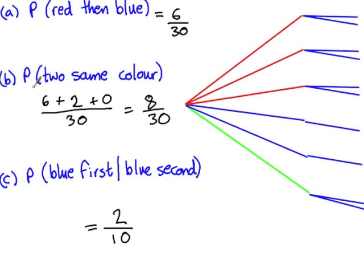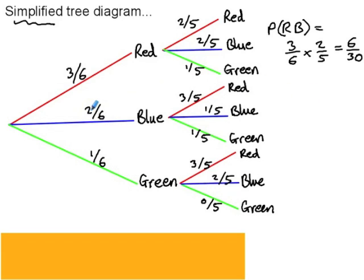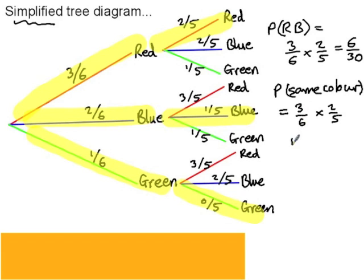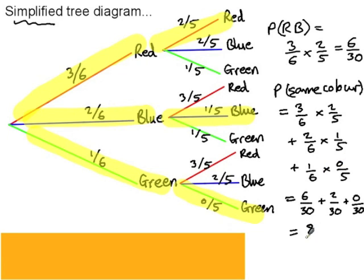The second question was: what's the probability of selecting two the same colour? Looking along the branches where we've got two the same colour — that's red-red, blue-blue, or green-green. The probability of same colour is three over six multiplied by two over five, plus two over six times one over five, plus one over six times zero over five, which gives eight over thirty.